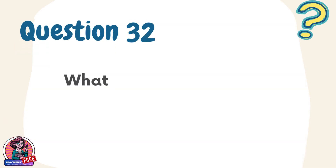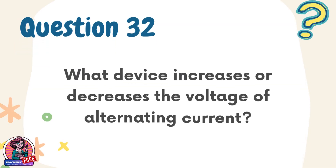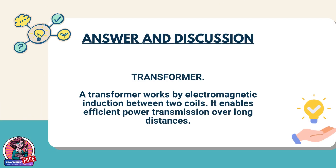Question 32. What device increases or decreases the voltage of alternating current? Answer: transformer. A transformer works by electromagnetic induction between two coils. It enables efficient power transmission over long distances.